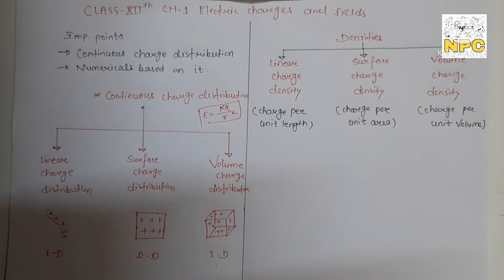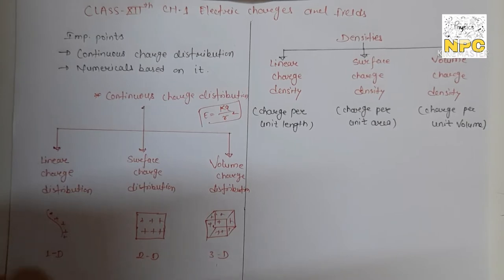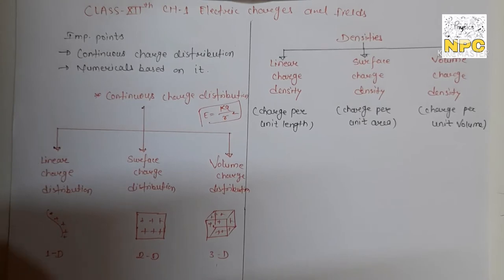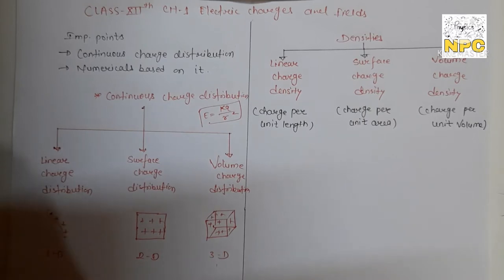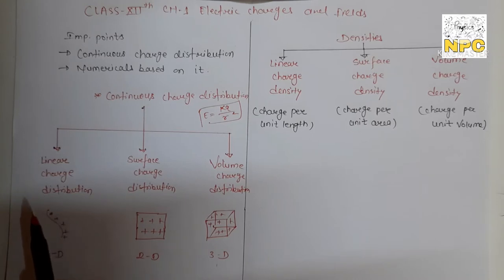Linear charge distribution means charges are distributed uniformly on a line. The word 'uniformly' is key - it means charges are equal at every point on that line or shape. Uniform charge distribution simply means charges distributed at every point are equal. Linear charge distribution is 1D - you distribute charges along only one line.